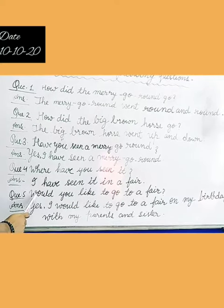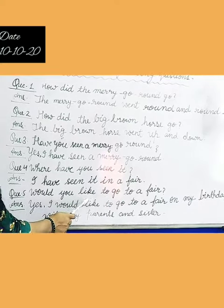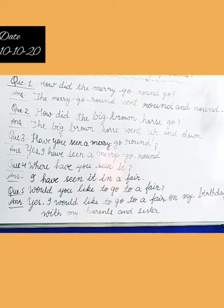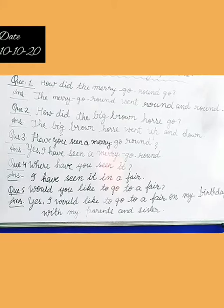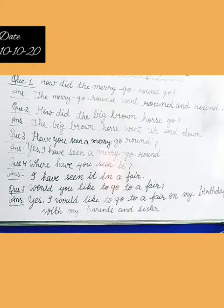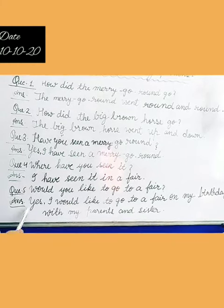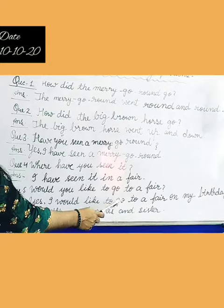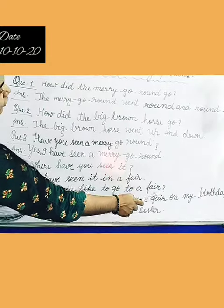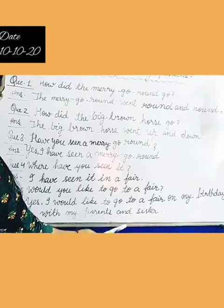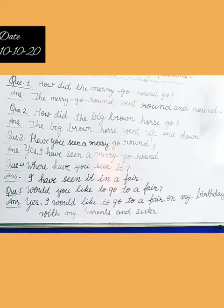Question number 5 is: would you like to go to a fair? Kia apne Merry-Go-Round ko fair, yani mele mein jana kasan hai? So you will answer: yes, I would like to go to a fair on my birthday with my parents and sister.